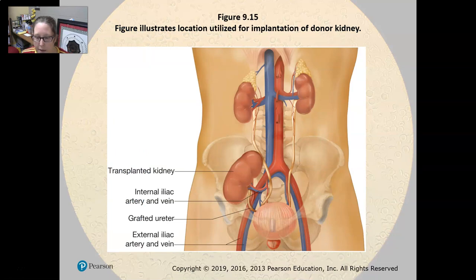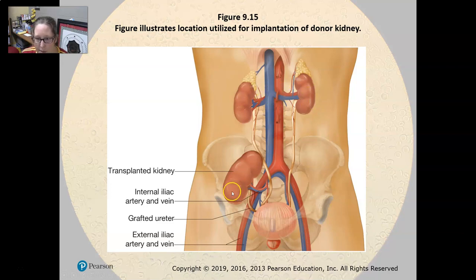This diagram shows where donor kidneys are placed. The diseased kidneys remain in their normal position, and here is the transplanted kidney shown in its new location.